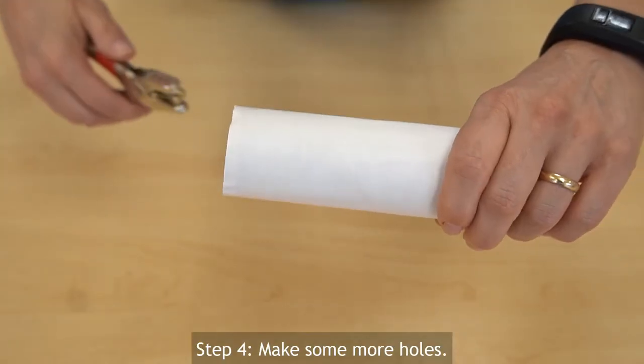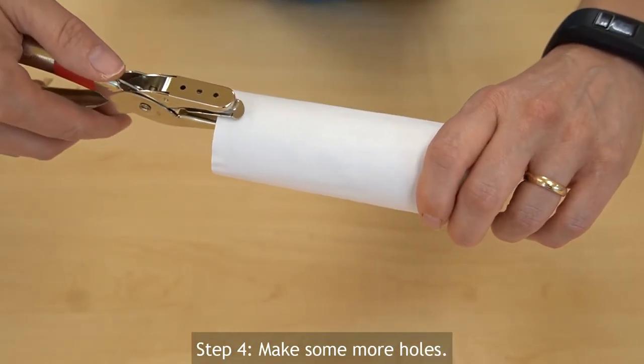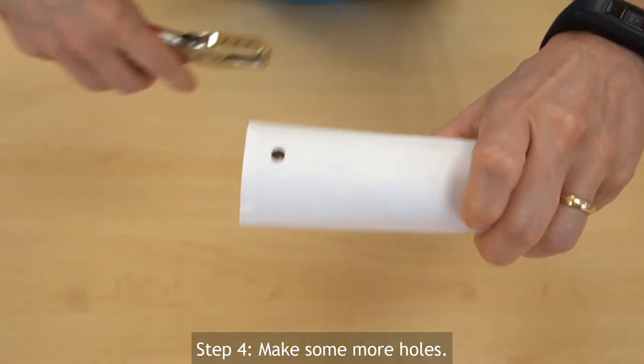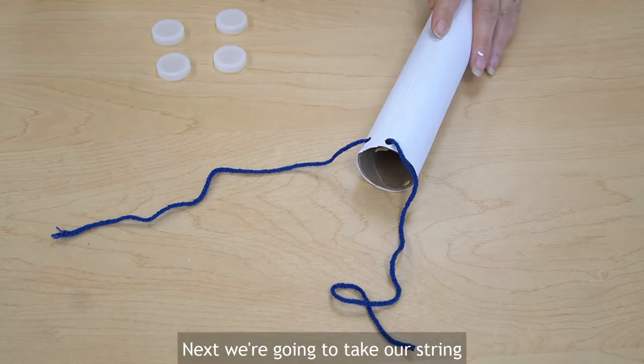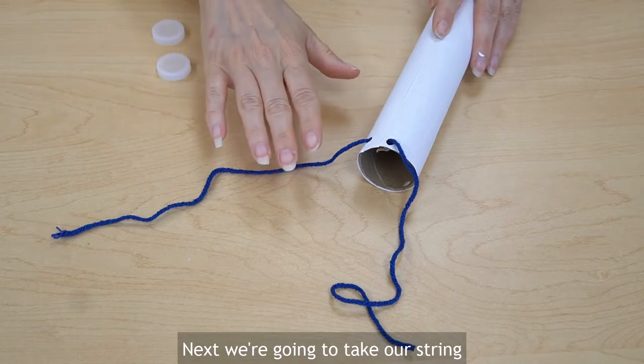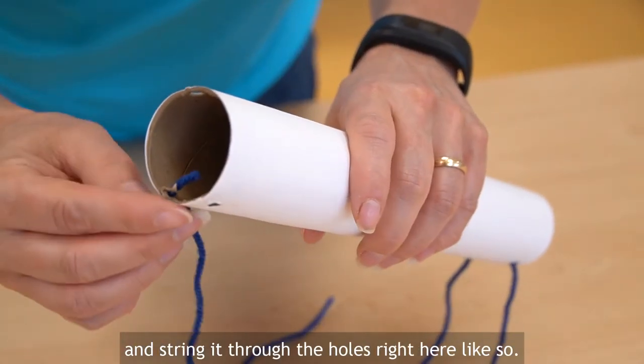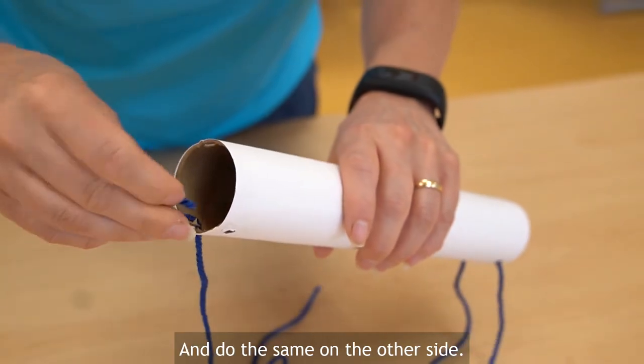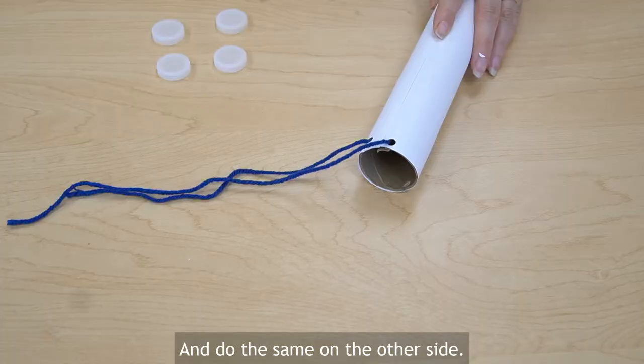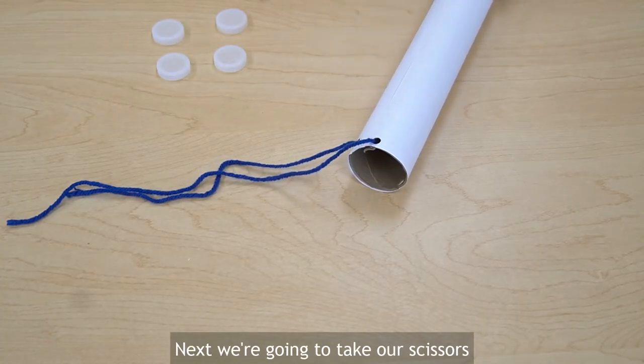Step four, make some more holes. And then one on the other side. And next we're going to take our string and string it through the holes right here like so. And do the same on the other side.